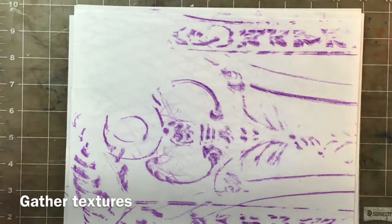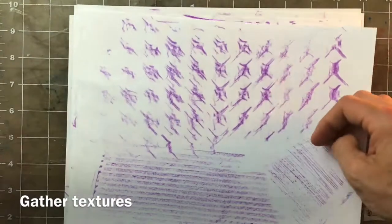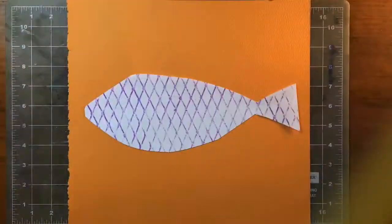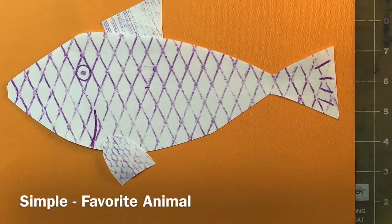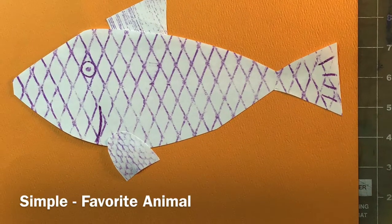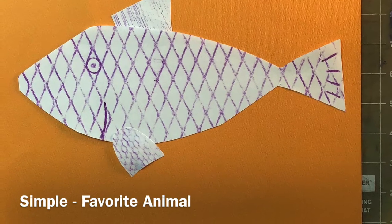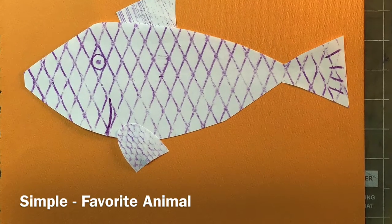So we'll go around our house or our learning area and we'll try to gather textures from around us, then we'll use pieces of those that we gathered to create a collage. It can be something simple like a favorite animal, or if you don't have a favorite animal, there's always the fish.